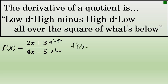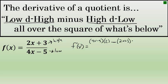The derivative of f of x begins with low d high: the denominator, the low part of the fraction, is 4x minus 5. D high is the derivative of the numerator — the derivative of 2x plus 3 is 2. Minus high d low: the high part, 2x plus 3, unchanged. D low, the derivative of the denominator, is simply 4.